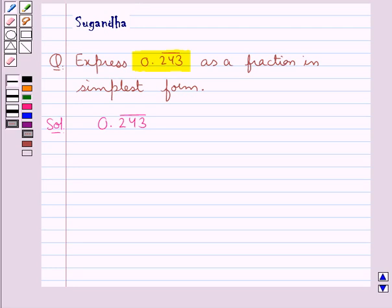First of all, let n be equal to the repeating decimal 0.243 bar. This could be written as 0.243, 243, 243 and so on.